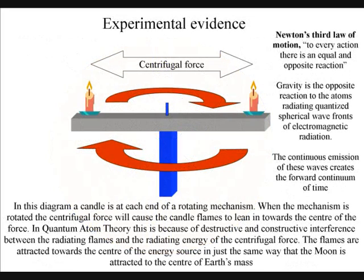In this diagram, a candle is at each end of a rotating mechanism. When the mechanism is rotated, the angular momentum will cause the candle flames to lean in towards the centre of the energy source.